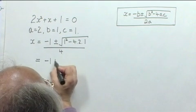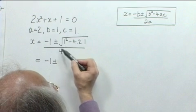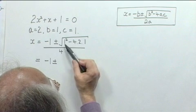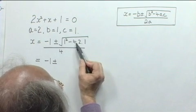Let's tidy up what we've got, minus 1, plus or minus. Now let's look at the square root. We've got 1 squared, which is 1, subtract 4 2s of 8. So it's 1, subtract 8, which is minus 7. You'll see again that we've ended up with the square root of a negative number.